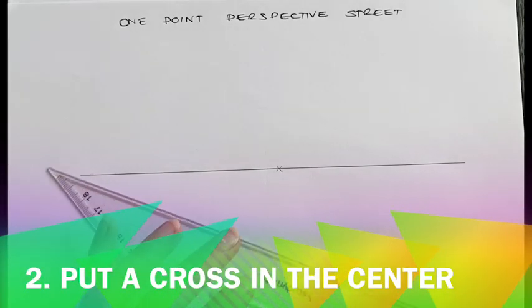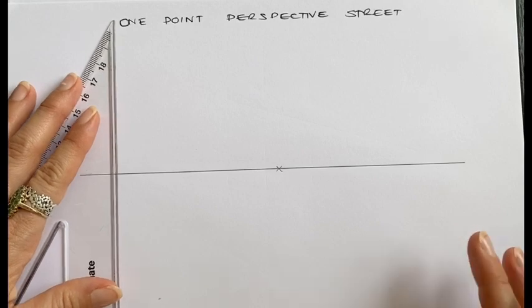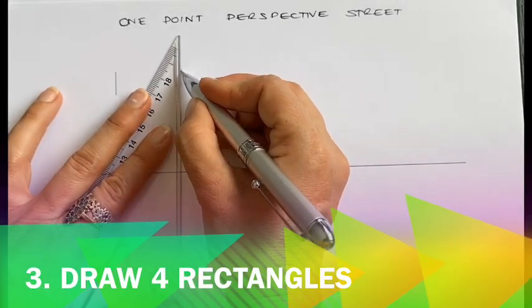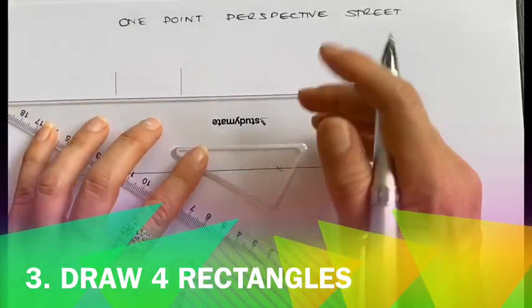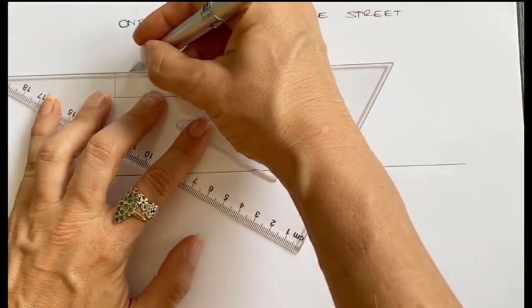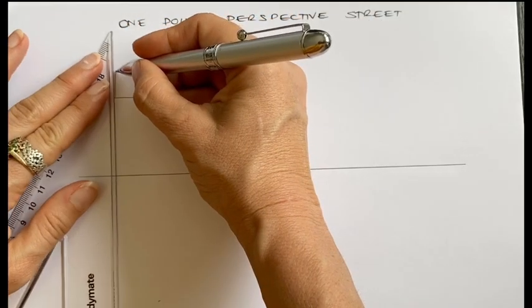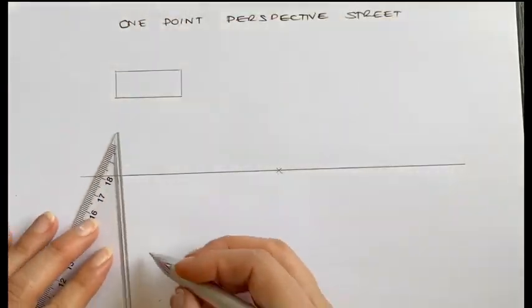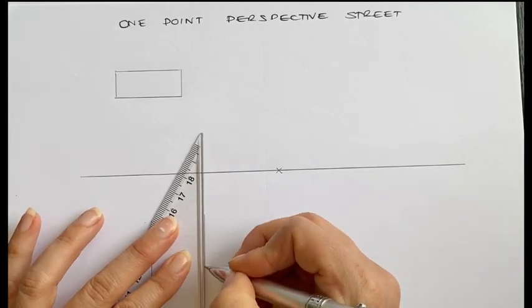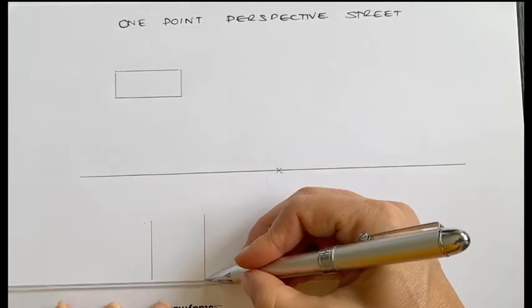Now, we're going to draw four rectangles. They can be whichever size you like. One in each of the corners of our page. So make them slightly different spacing, different sizes. The reason for this will become clear in a moment.